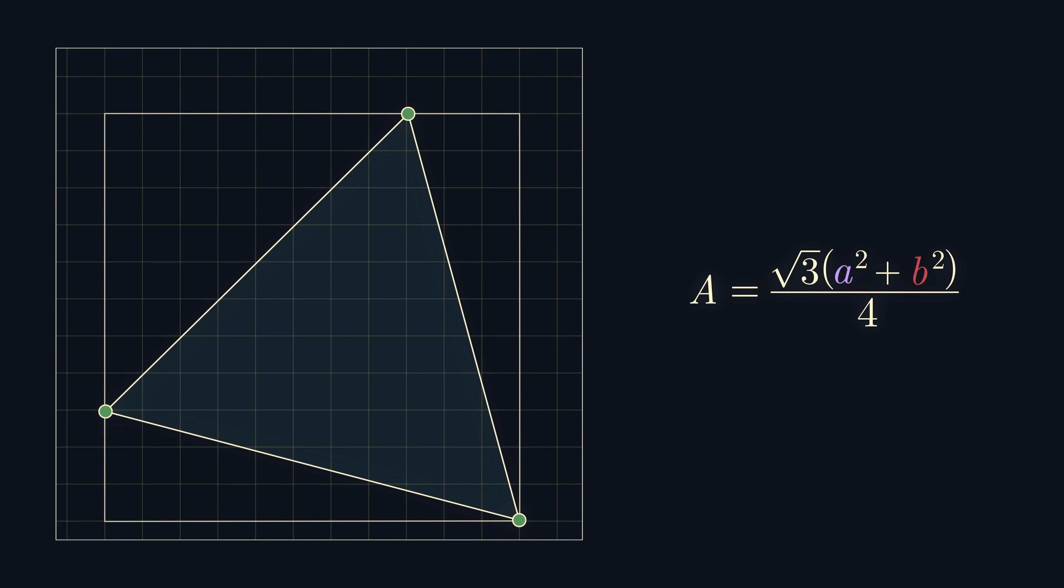If our triangle had integer coordinates, then so must this rectangle. But this tells us that the area of the rectangle must also be an integer. Also note that this rectangle is built up from our starting triangle, as well as up to three other right-angled triangles. These right-angled triangles have one horizontal and one vertical side, each of which must have an integer length.